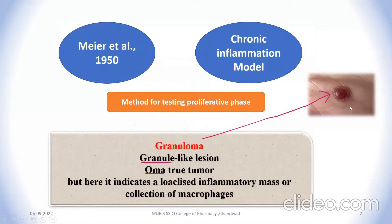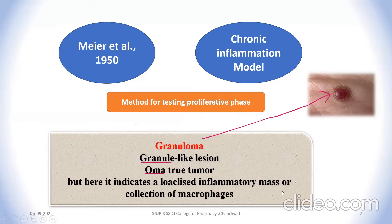In this picture you can observe a granuloma. Granuloma refers to a granule-like lesion — 'oma' means tumor. But here we are not using this term in the cancer sense; it indicates a localized inflammation mass or collection of macrophages.